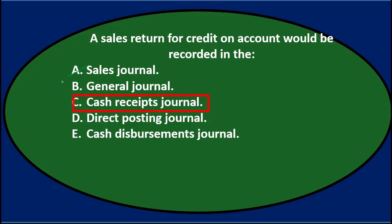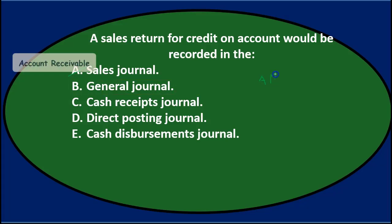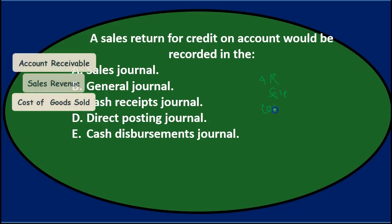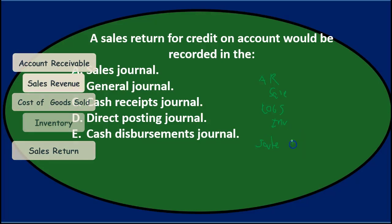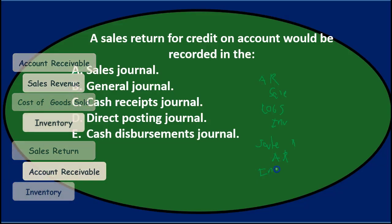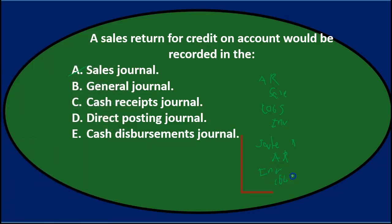C is the Cash Receipts Journal. If we think about the journal entry for a sales return for credit — if we made a sale, we would debit accounts receivable and credit sales revenue, then debit cost of goods sold and credit inventory. To reverse that for a sales return, we would debit sales returns and credit accounts receivable, debit inventory, and credit cost of goods sold. There's no cash involved here, so it can't go to the Cash Receipts Journal.